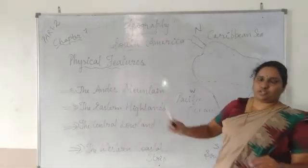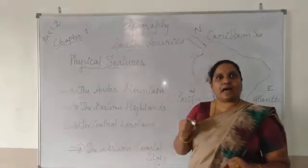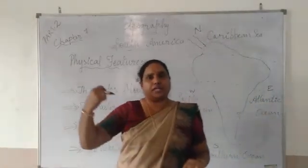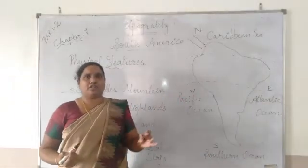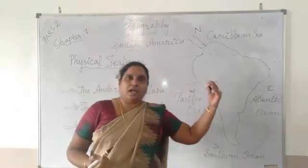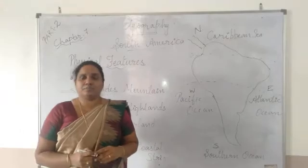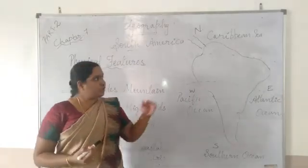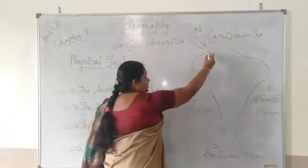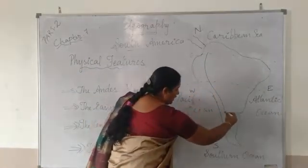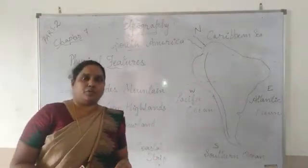The first one is the Andes Mountains, also called the Andean Cordilleras. When we studied North America, I told you that the Cordilleras are a chain of mountains which start from North America, continue through Mexico, and then again continue in South America. Here the same thing — on the western coast, it starts from the north tip of South America and continues to the south. It is a continuous chain of mountains.